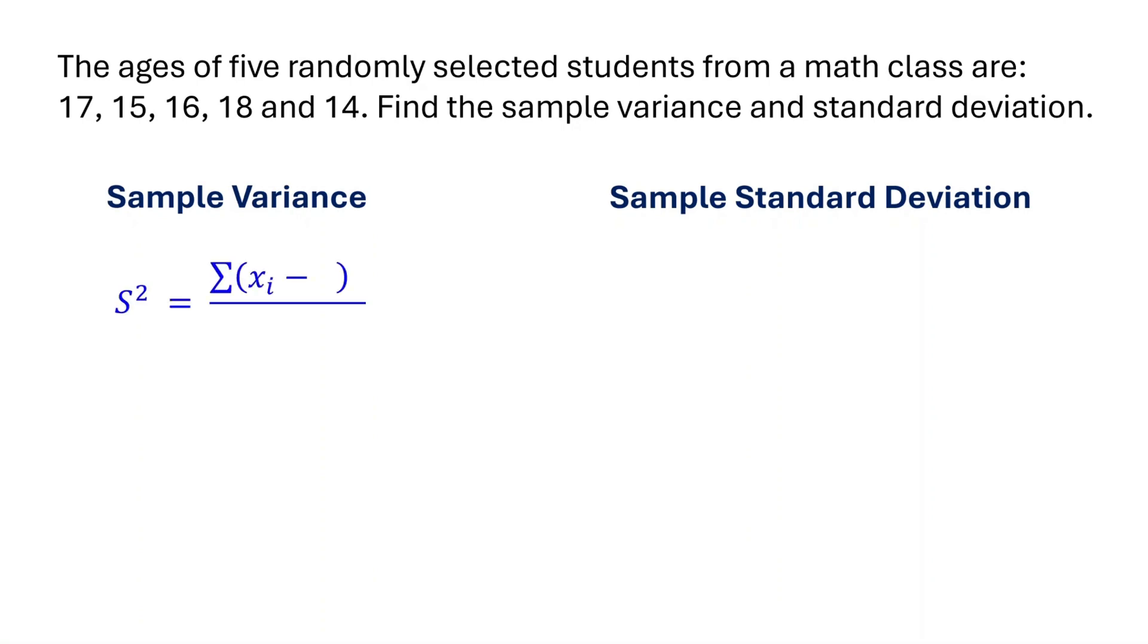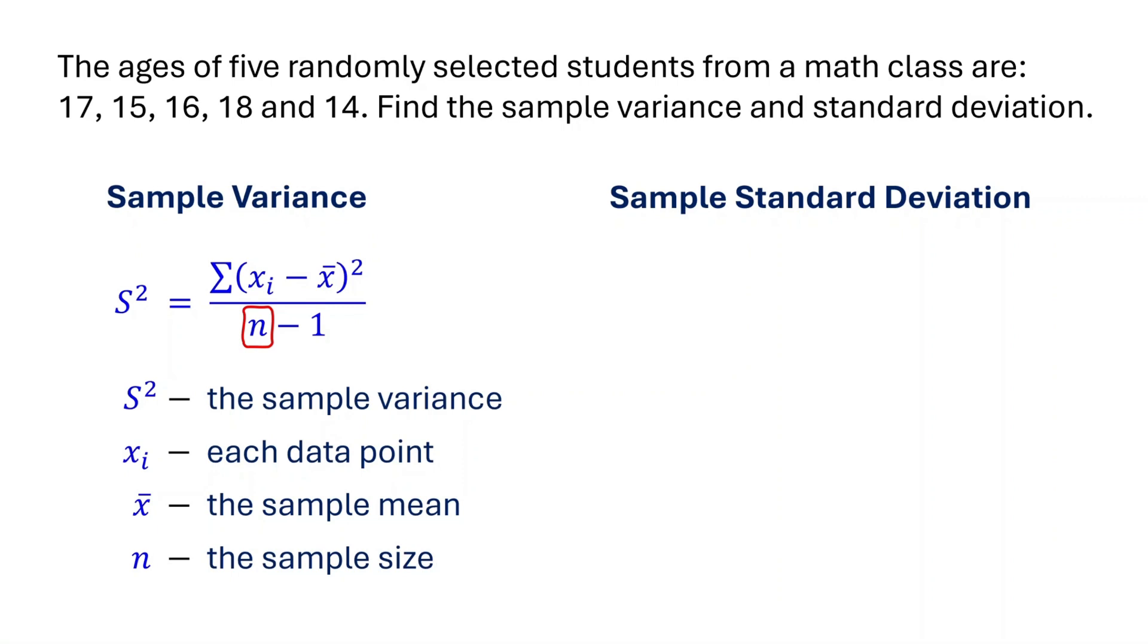The variance of a sample is calculated using this formula. Here, s squared represents the sample variance. xi represents each data point in the sample. x bar represents the sample mean, which is the average of the data points. n represents the sample size, which is the total number of data points. This symbol means sum up, telling us to add all the squared differences.